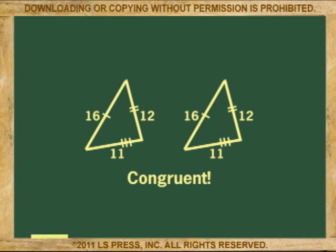On the other hand, these two triangles are equal in size and form, so we say that they are congruent.